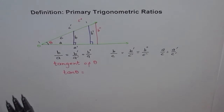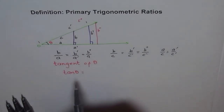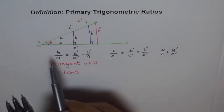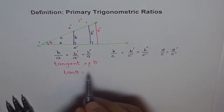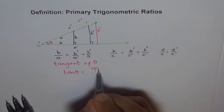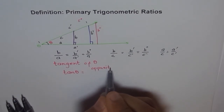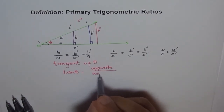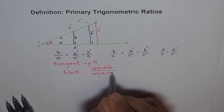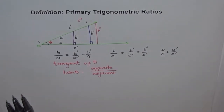So tan theta happens to be B over A. Now it is difficult to remember which side over which side. So we say: this is my theta angle and B is opposite to theta. So tan theta is opposite over A, which is adjacent. So we came with tan theta equals opposite over adjacent.